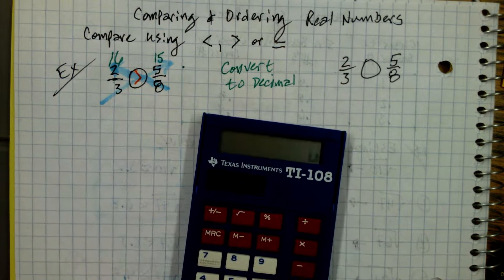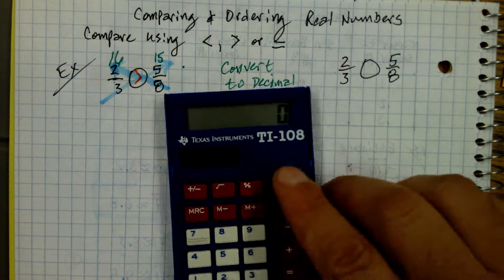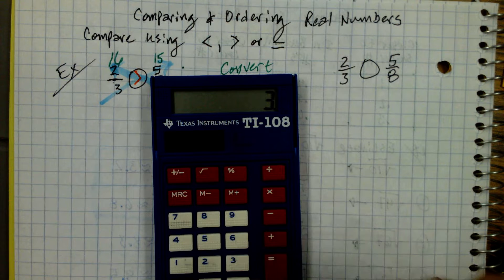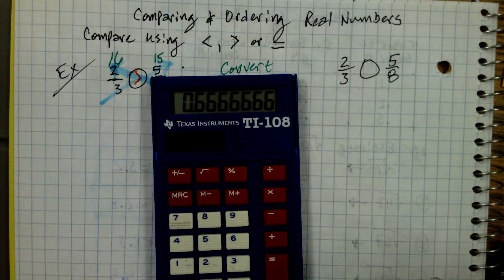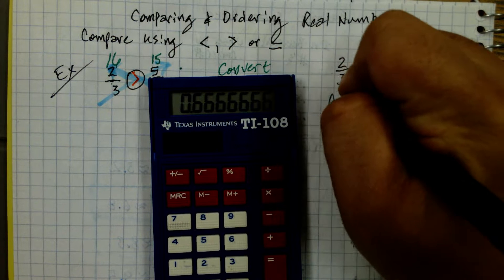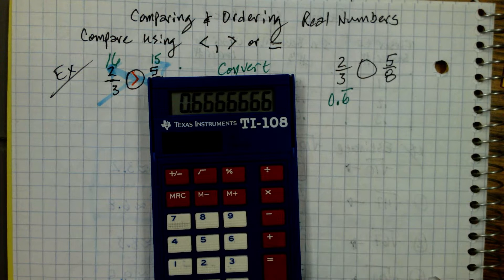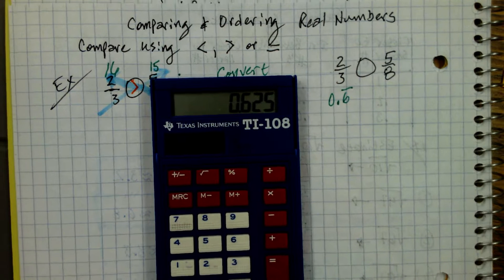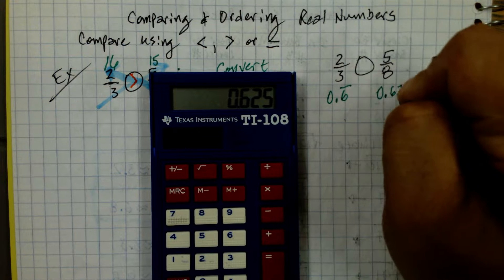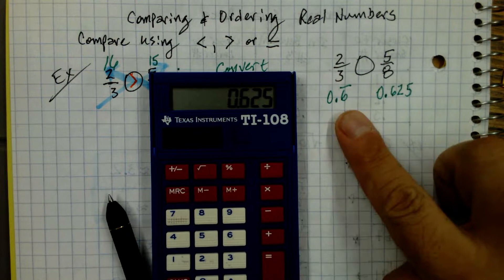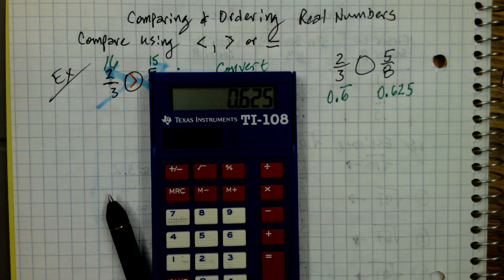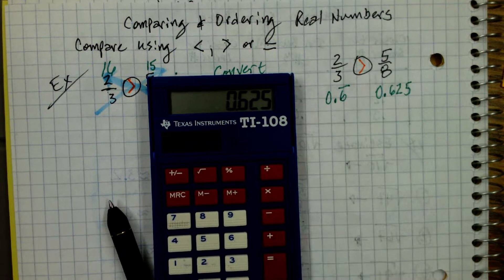Let's convert to decimal. Everyone take out your calculators. Does anyone recall how we changed two-thirds to its decimal form? Some people are saying to divide — yes, it's two divided by three. That's a repeater, so I'm going to write 0.6 repeating. Now let's convert five-eighths: five divided by eight is 0.625. So they're very close, but 0.667 repeating is larger. We're going to be using this method where you divide.